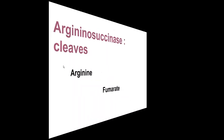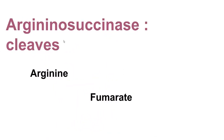Step 4 is the synthesis of arginine. The enzyme argininosuccinate lyase cleaves arginosuccinate into arginine and fumarate. Arginine is the immediate precursor to urea.